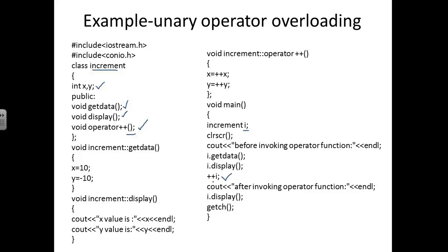The operator member function is invoked like this: ++I (operator is ++ and object is I). After invoking the operator function, calling I.display() again shows x is now 11 — incremented by 1 — and y, which was -10, becomes -9 after incrementing by 1. That is the result after invoking the operator member function.